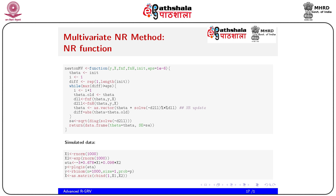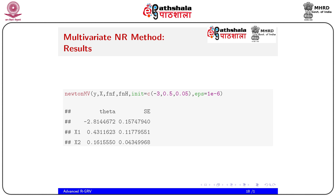To simulate data: x1 ~ Normal, x2 ~ Exponential (log-normal), eta = -3 + 0.67*x1 + 0.098*x2, p = plogis(eta), y ~ Binomial(1000, size=1, prob=p). The design matrix x is cbind(1, x1, x2). Then apply our Newton-Raphson function with these data, the score and hessian functions, initial values of zero, and eps = 1e-16.